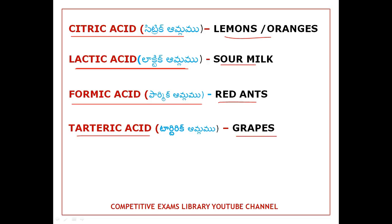To recap: Citric Acid is from lemons and oranges. Lactic Acid is from sour milk. Formic Acid is from red ants. Tartaric Acid is from grapes.